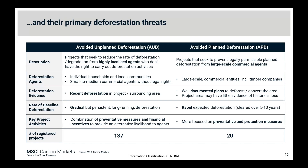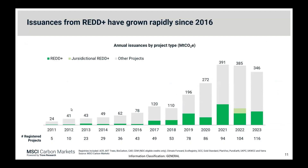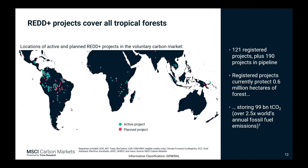Putting REDD+ projects together as a whole in the VCM, issuances have grown rapidly since 2016, reaching 346 million tonnes of CO2 equivalent in 2023 from a total of 116 registered and issuing projects. Including 190 pipeline projects, they cover all kinds of tropical forests around the globe. The registered projects alone cover 600,000 hectares of forest and store 99 billion tonnes of CO2 equivalent — over two and a half times the world's annual fossil fuel emissions.